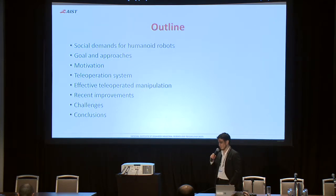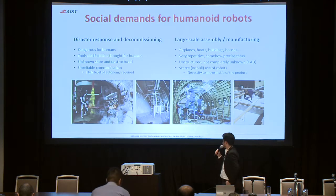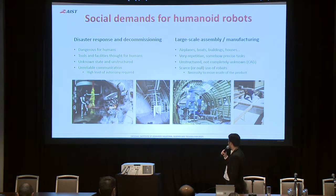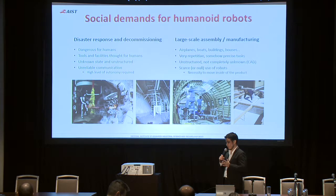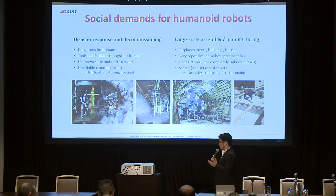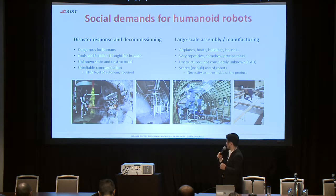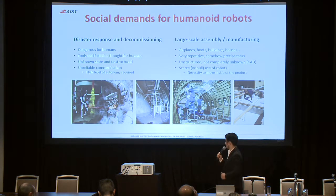We have identified two main social demands for humanoid robots. The first is their use in disaster response and decommissioning, because these scenarios are still too dangerous for humans, yet the facilities and tools the robot must use are designed for humans — making humanoid morphology ideal. However, because of disaster conditions the environment state is unknown and unstructured, communication cannot be relied upon, and therefore a high level of autonomy is required.